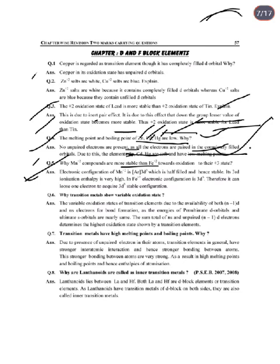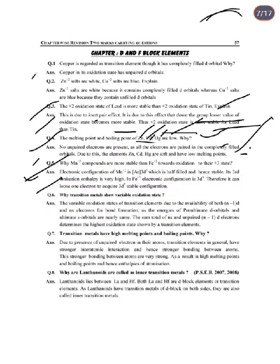Next: Why are Mn²⁺ compounds more stable than Fe²⁺ toward oxidation to their +3 state? The electronic configuration of Mn²⁺ is 3d⁵, which is half-filled and hence very stable. The third ionization enthalpy is very high, making it difficult to remove further electrons. Fe²⁺ can easily lose one electron to form the stable 3d⁵ configuration of Fe³⁺.